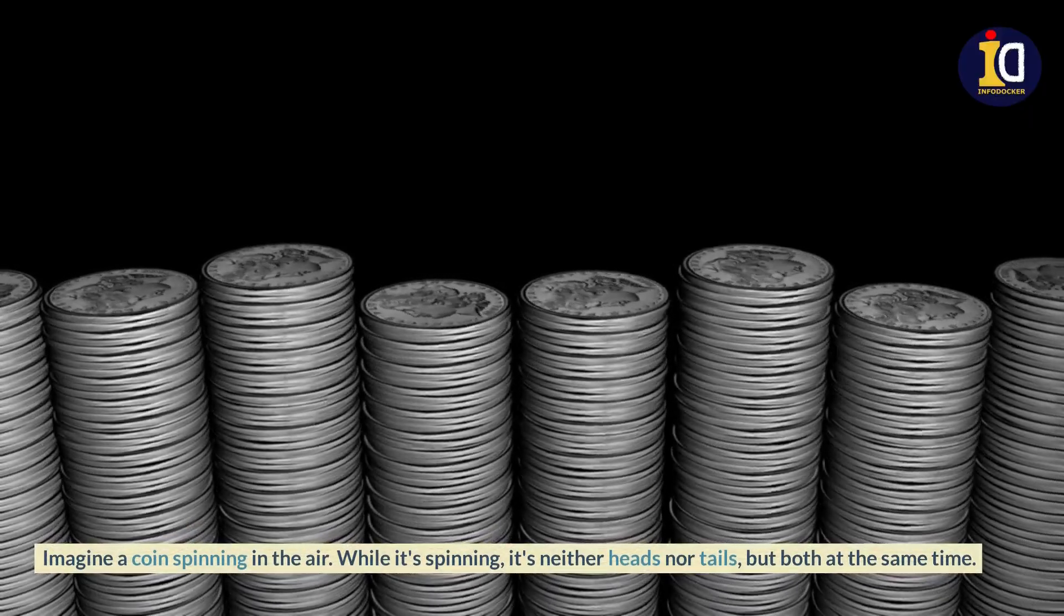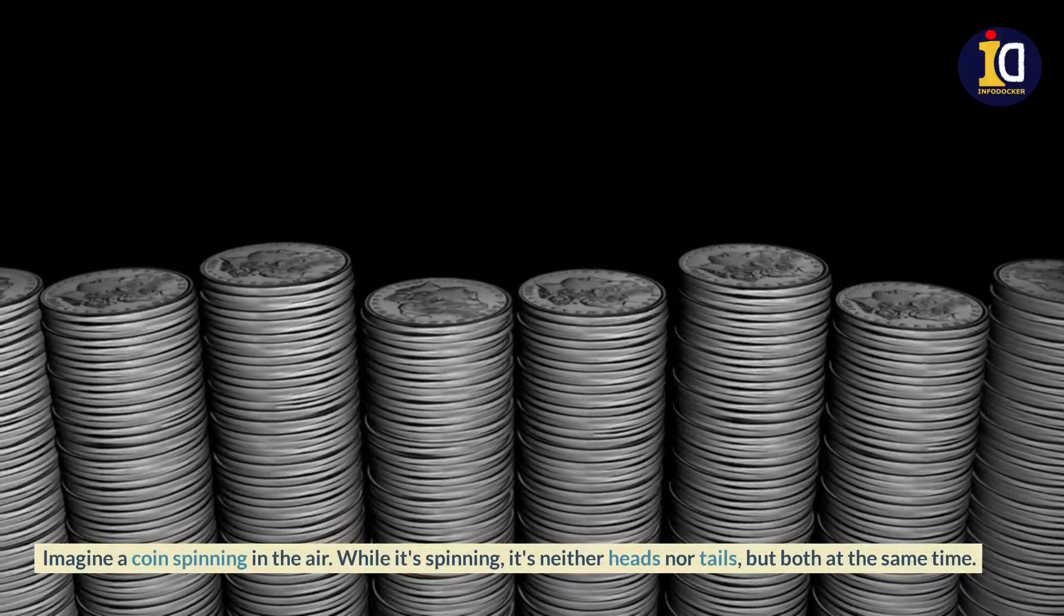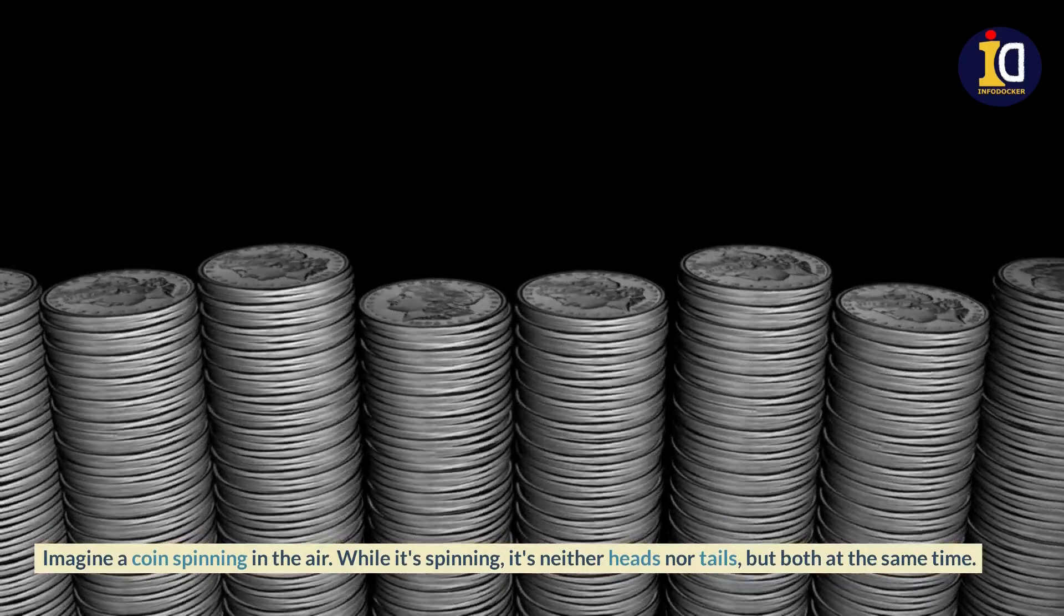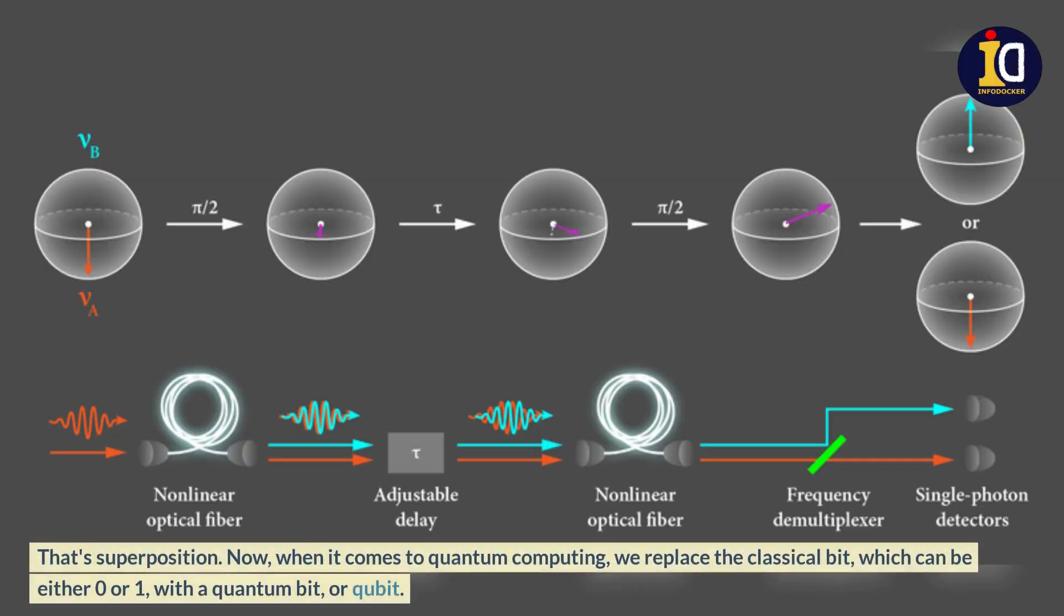Imagine a coin spinning in the air. While it's spinning, it's neither heads nor tails, but both at the same time. That's superposition.